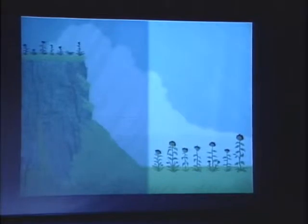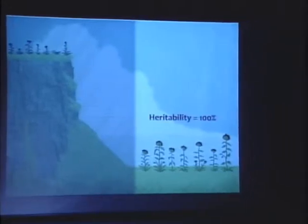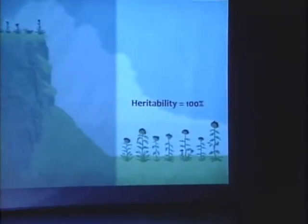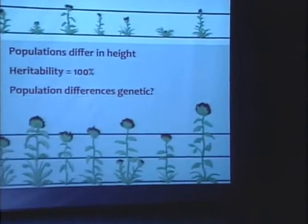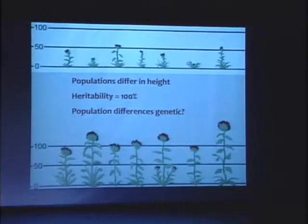Meanwhile, at the bottom of the hill, or the mountain, David Keck went out and planted his seven cuttings from the same genotypes and saw that they grew very well. Again, there was variation among plants. But he could conclude, because he also controlled the environment very carefully, that the heritability was around 100%.